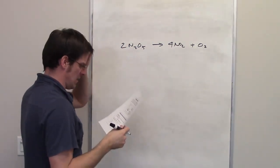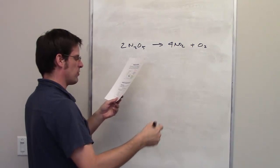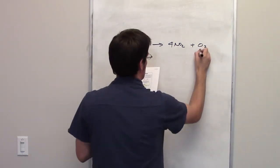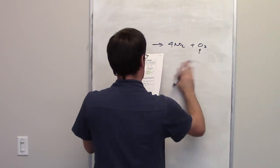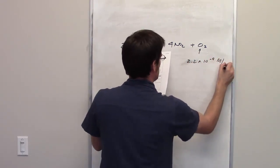I'm not going to write down the physical states. They're all gases in this case. It tells us that the rate of formation of O2 is 2.2 times 10 to the negative 4 molars per second.